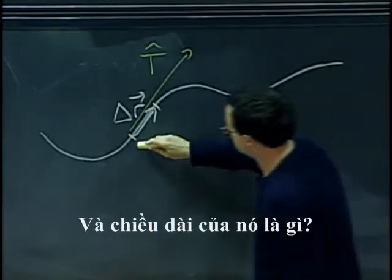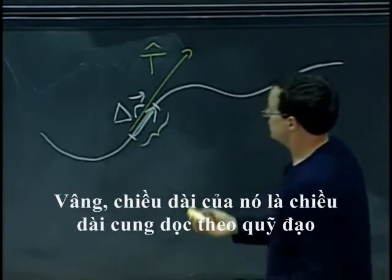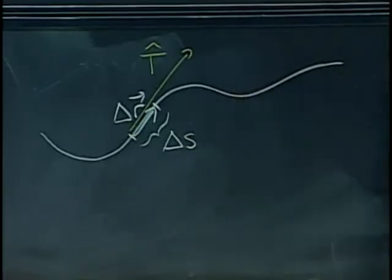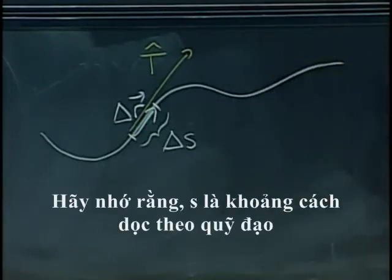And what is its length? Its length is the arc length along the trajectory, which is what we called delta s. Remember, s was distance along the trajectory.